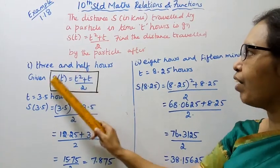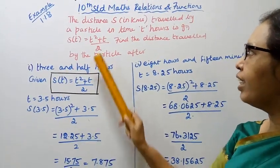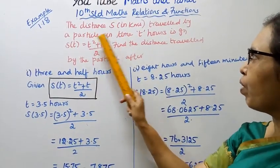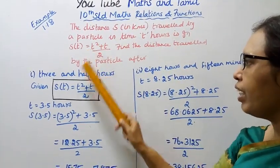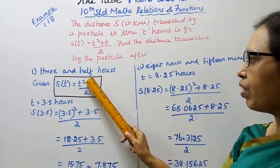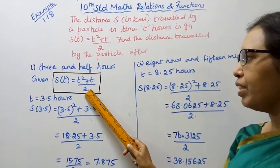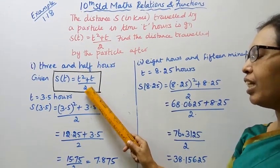S of t is given. The distance s traveled by a particle in time t is given by s of t equal to t squared plus t by 2.